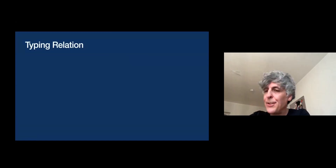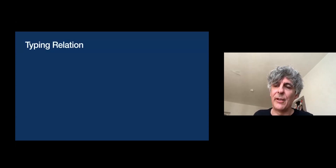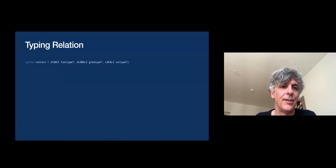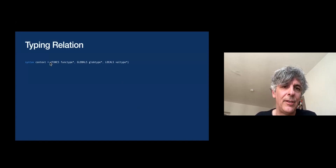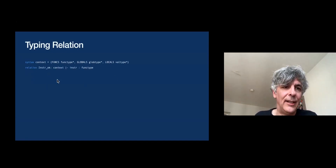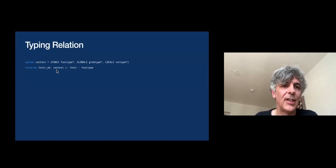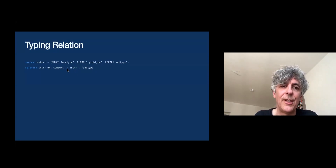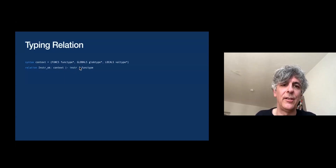The other big feature is a generic way to define what the DSL calls relations — that's the big feature that allows us to define both typing rules and reduction rules. To do typing, we first define some auxiliary syntax for contexts using a record notation built into the DSL. Here the context knows about functions, globals, and locals. Then I can declare a relation — basically a judgment form. In this case it's the judgment form for instruction typing: a context types an instruction with a function type. This implicitly defines notation — the turnstile and colon are meta-level notation I can pick to make it more readable.